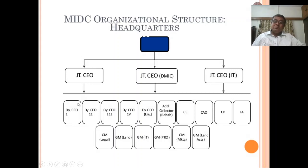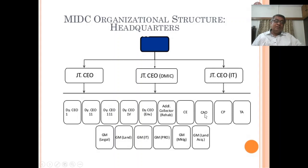Under the Joint CEO comes Deputy CEO Part 1, Deputy CEO Part 2, Deputy CEO Part 3, Deputy CEO Part 4, Deputy CEO Establishment, and an Additional Collector for Rehabilitation — rehabilitation meaning to rehabilitate people whose land is acquired for industrial use. Then one Chief Engineer and one Chief Accounts Officer.